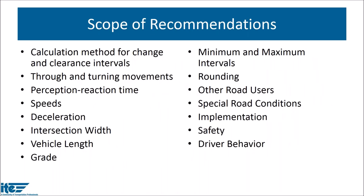The scope of the recommendations — and if you haven't looked at the recommended practice, here's how it's put together. The largest portions are in Chapter 2, which contains a description of current practice and optional methods for calculating and considering various aspects of change and clearance intervals, concluding with a recommendation in each section. Those recommendations are then summarized in Chapter 3, which some might view as the recommended practice itself. But there's a lot more supporting information, including survey results, various research done over the years, and identification of additional research still needed.